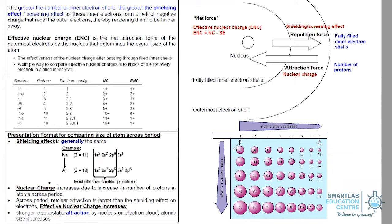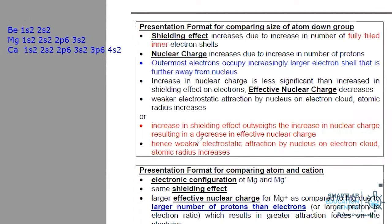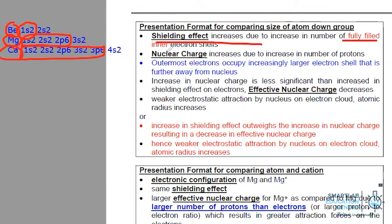Let us take a look at down the group. If you look down the group, you can see the size of the atom actually increases. Looking at the electronic configuration for the group two elements, in the case of beryllium, the 1s² electrons provide the shielding effect. In the case of magnesium, there are more electrons providing the shielding effect. So quite clearly, the shielding effect increases due to fully filled inner electrons.